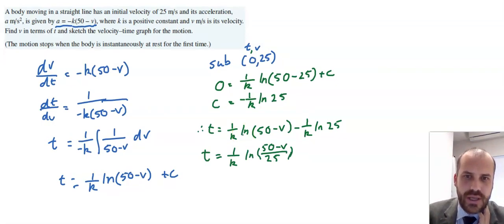Okay, the motion stops when the body is instantaneously at rest for the first time, when the velocity is equal to 0. So, our graph is going to stop when the velocity is equal to 0. Let's sketch this.